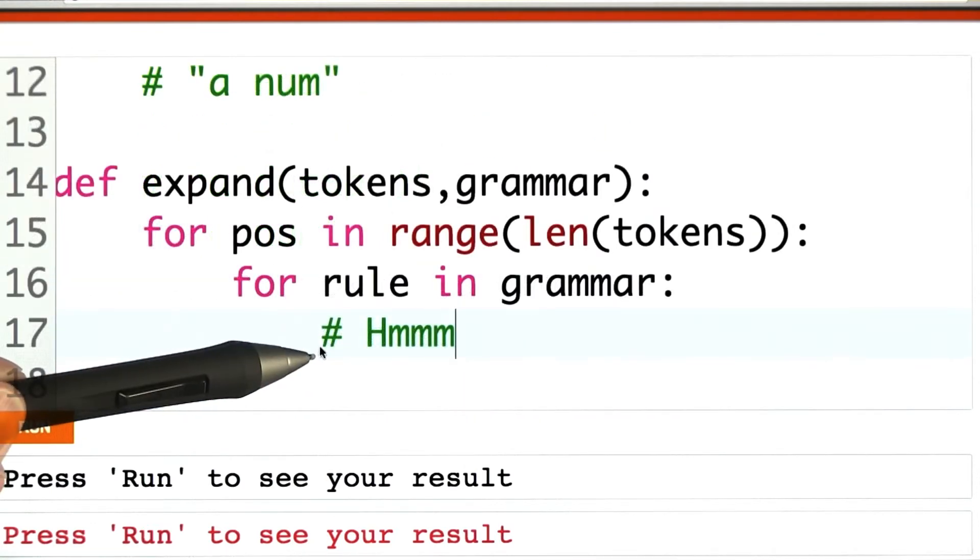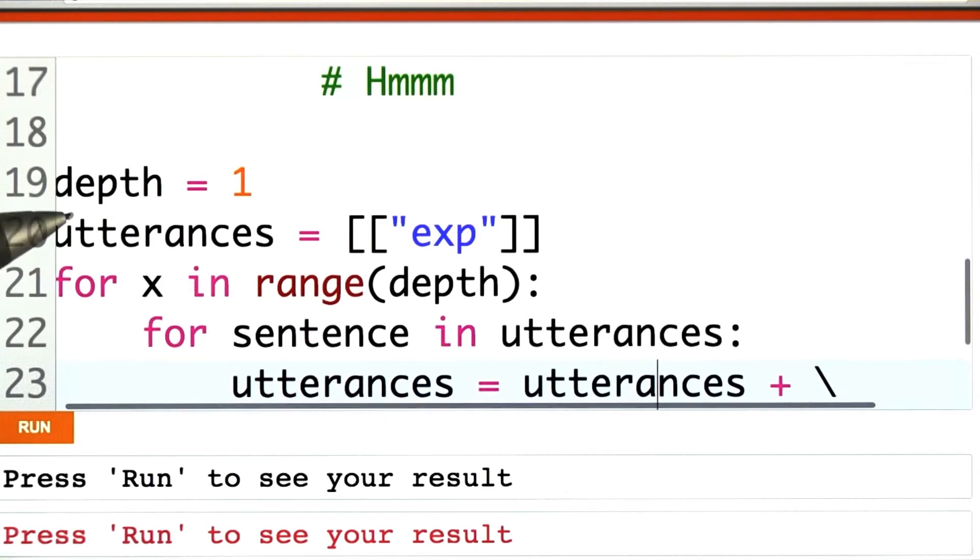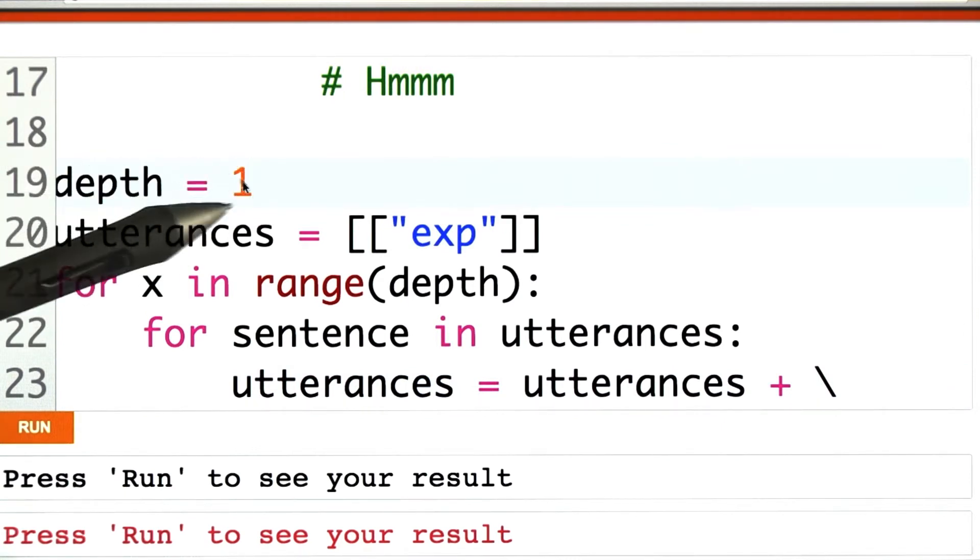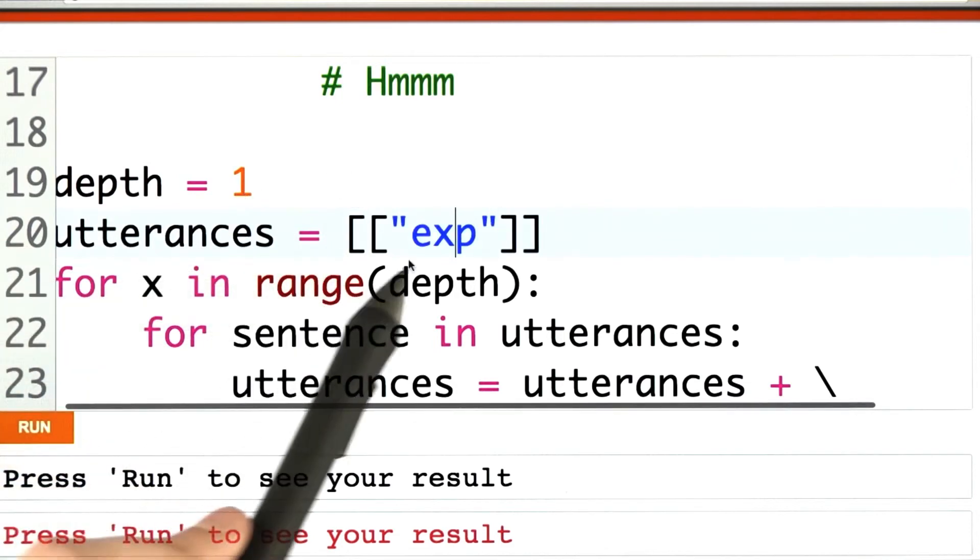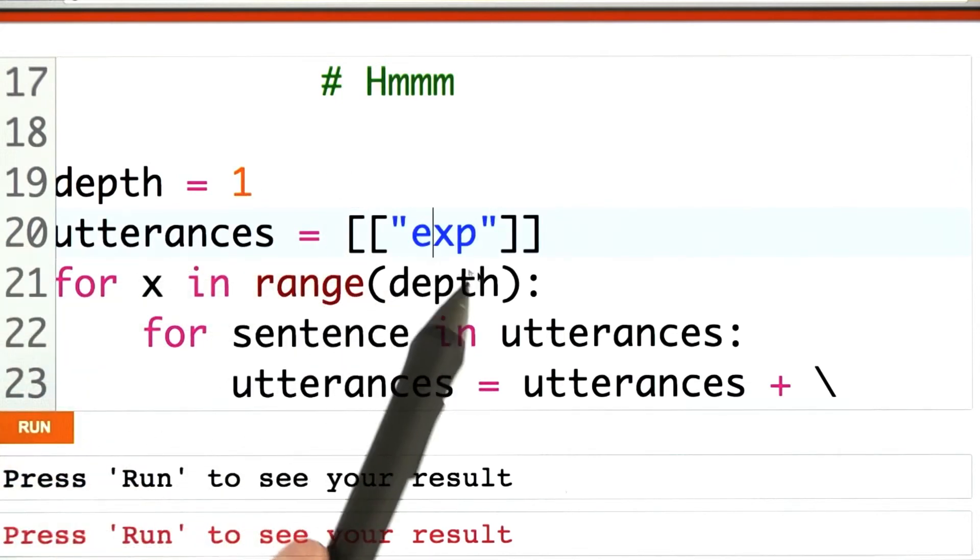You're going to have to help me write that expansion procedure. Down here I've got some code to help us print it out. For now we're only going to enumerate things up to a depth of one, and we're going to start with just expression.